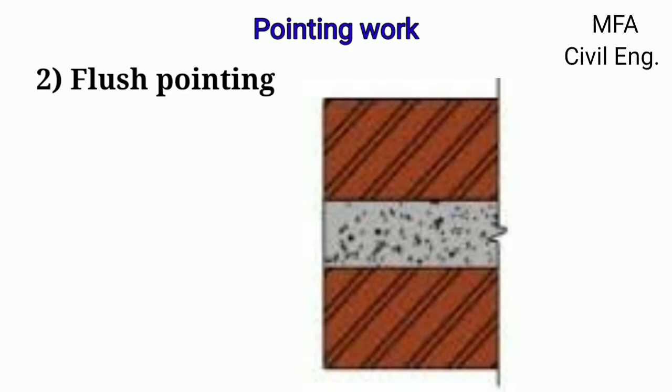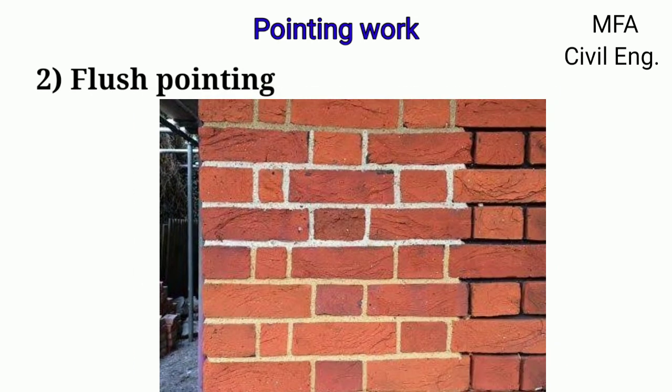In flush type of pointing, joints are raked and finished flush with the face of the brick masonry. The edges are properly trimmed. It is the simplest type of pointing which is extensively used in masonry work. This pointing does not give a good appearance but is very durable and does not allow dust and dirt to collect on it.